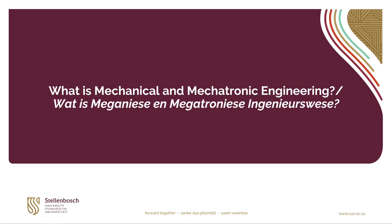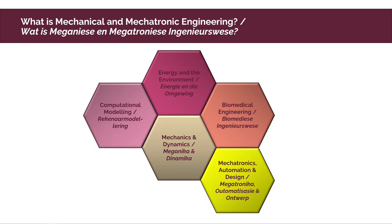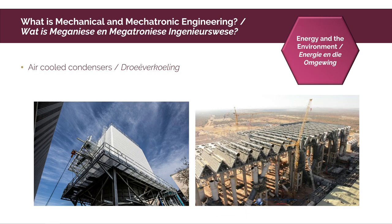To give you a sense of what a mechanical or mechatronic engineer does in real life, here is an overview of the research themes in our department. The first theme is energy and the environment. Engineers use the foundations of science and mathematics to optimize designs that are efficient and have the least possible impact on the environment. An example is air-cooled condensers for power stations in South Africa, where we have little water. Most of our power stations are coal-fired, so we use the heat to generate steam, which must eventually be cooled down again — and air-cooled condensers accomplish that.